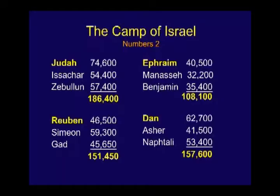Something else you'll learn in Numbers is that these 12 tribes are to muster into four camps. There's the camp of Judah, where Issachar and Zebulun muster with him under his ensign — Judah had a lion, the lion of the tribe of Judah, on his ensign. And then there's the camp of Reuben, where Simeon and Gad muster under his ensign. His symbol is a man.